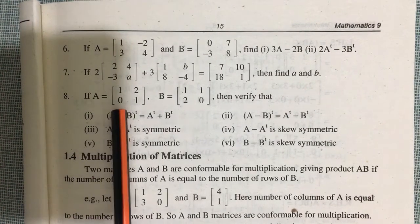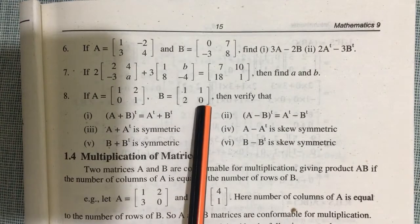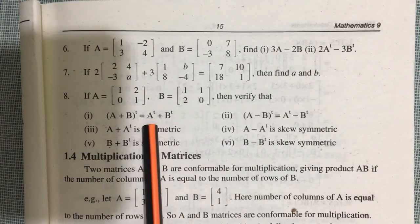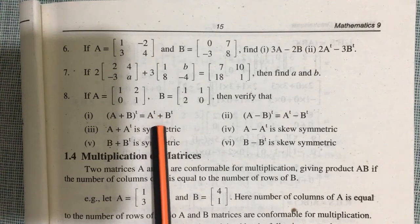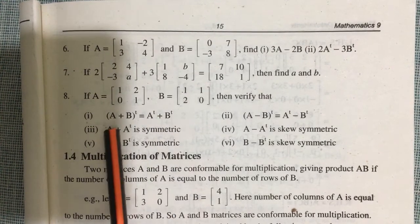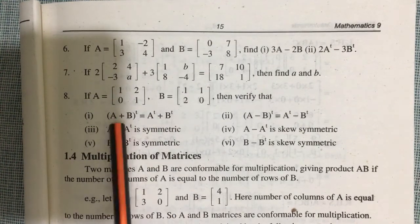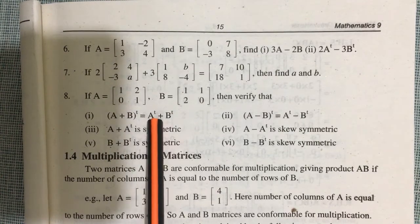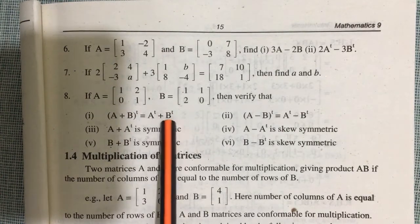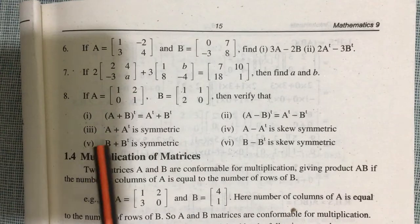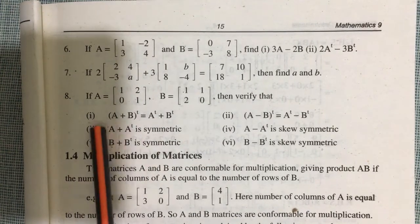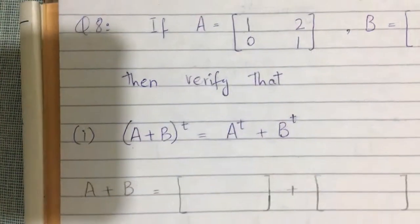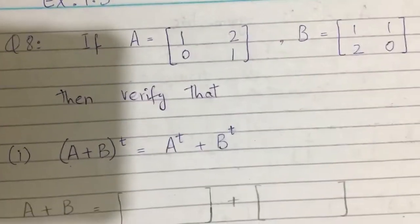Part 8: If A and B are the given matrices, verify that first, (A+B) whole transpose is equal to A transpose plus B transpose. So you have to prove whether (A+B)^T = A^T + B^T. First, you have to add A plus B, then take their transpose. So the left hand side is (A+B) whole transpose.